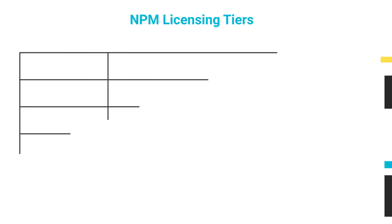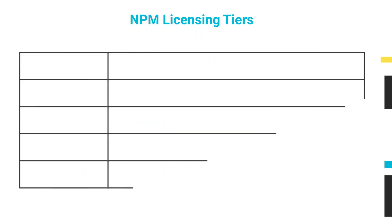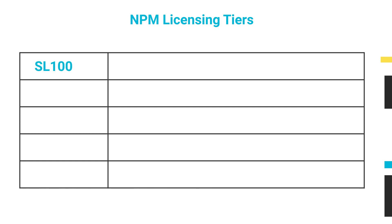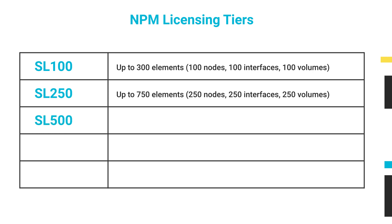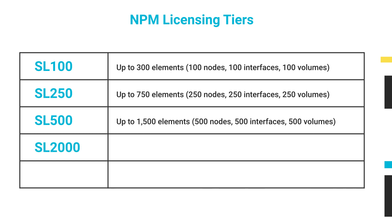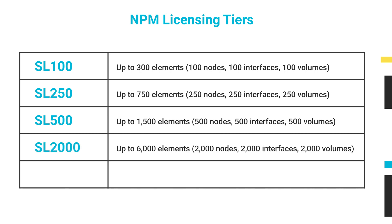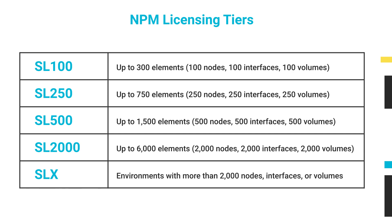There are five licensing tiers available for Network Performance Monitor: SL100, which monitors up to 300 elements; SL250, which monitors up to 750 elements; SL500, which monitors up to 1,500 elements; SL2000, which monitors up to 6,000 elements; and SLX, which monitors environments with more than 2,000 nodes, interfaces, or volumes.